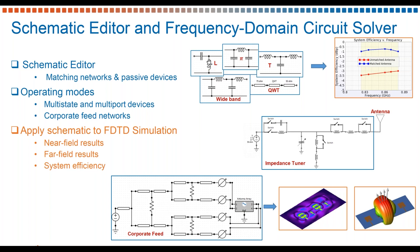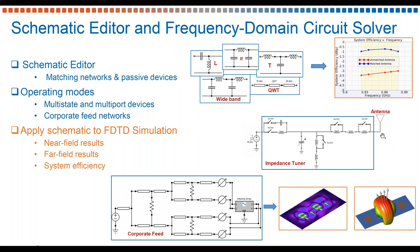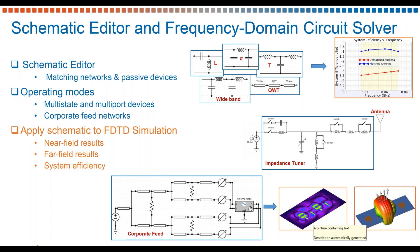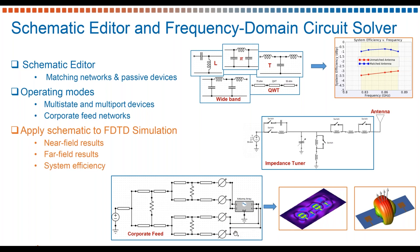At the top, we've got examples of L, Pi, and T networks. We have here an aperture and impedance tuner connected to an antenna. The schematic editor will also account for operating modes — imagine this impedance tuner tuned for various bands. And at the bottom, we have an example of a corporate feed network complete with phase shifters connected with an antenna array. When applied to the FDTD block, we can evaluate any number of schematic designs to see the impact on near and far-field results and, of course, system efficiency.